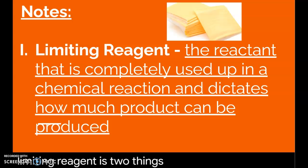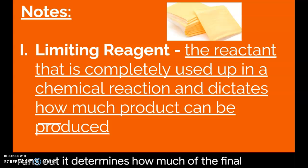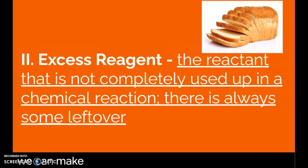But the limiting reagent is the thing that gets completely used up in the chemical reaction. So it's like our ingredient or our reactant that gets used up. And so because it runs out, it determines how much of the final product we can make. The excess reagent is just the opposite of that. It's the thing that does not get completely used up. So it's the thing that we have leftovers or extra of.